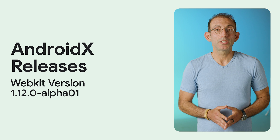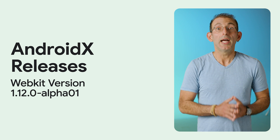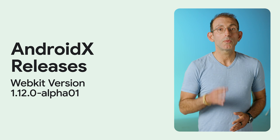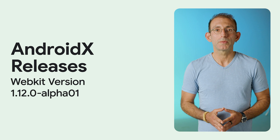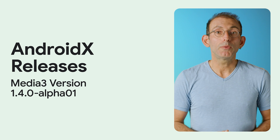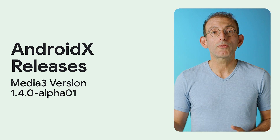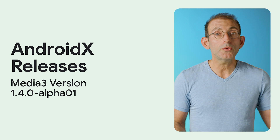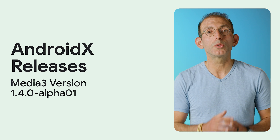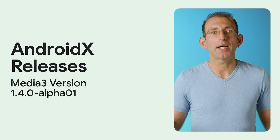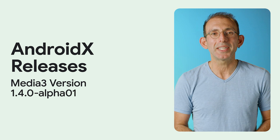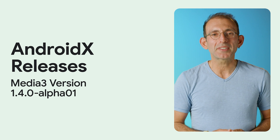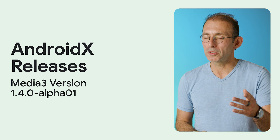WebKit Version 1.12 Alpha 1 adds a new API to enable web authentication in WebView. Media3 Version 1.4 Alpha 1 includes changes, new features, and bug fixes to many APIs and ExoPlayer. Make sure to check out the AndroidX release notes to learn more.